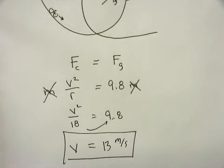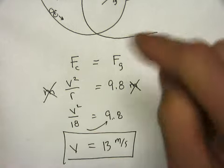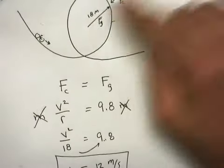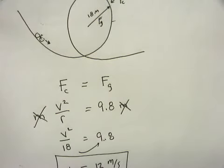But when you go around a loop-de-loop, it doesn't matter how big you are. It only matters how fast you're going, because how fast you're going relates directly to the radius of the loop-de-loop.